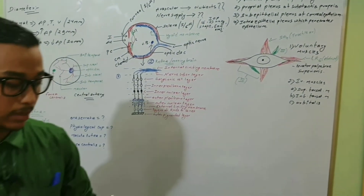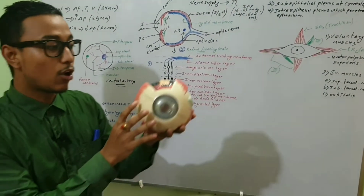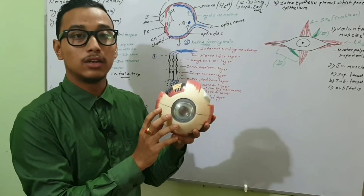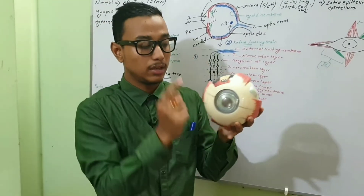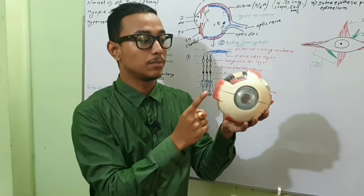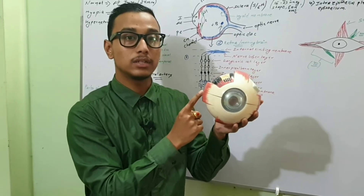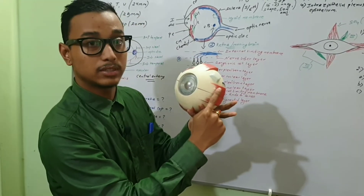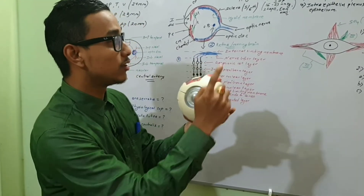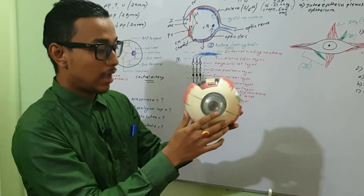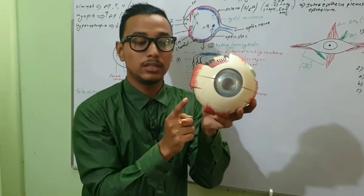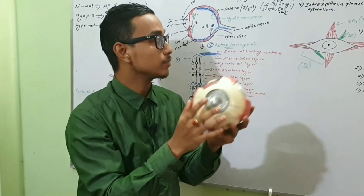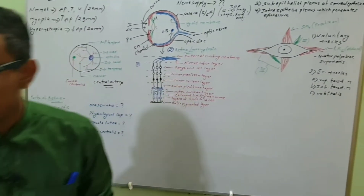Here on the dummy of the eyeball we can see the four rectus muscles: superior rectus, inferior rectus, medial rectus, and lateral rectus as already discussed in the figure. This is the superior oblique muscle and this is the inferior oblique muscle.